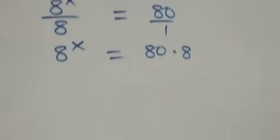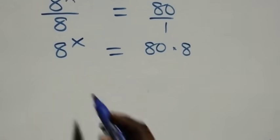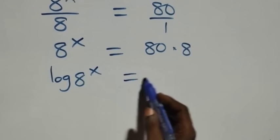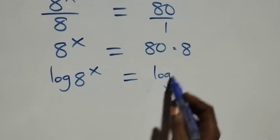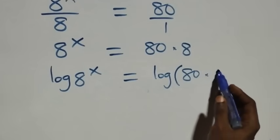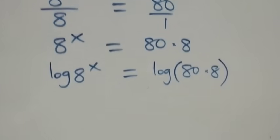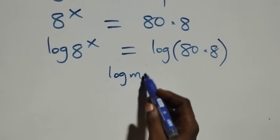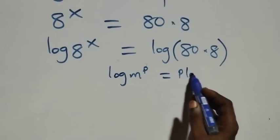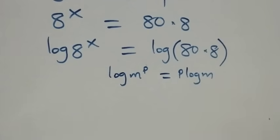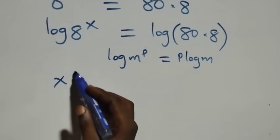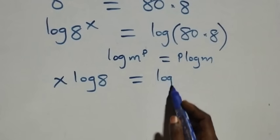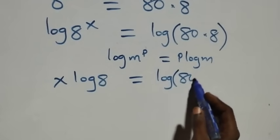The next step: we take the log on both sides, that is we have log of 8 raised to power x equals to log of 80 times 8. Then we apply the power law of logarithm, where log m raised to power p is the same thing as p log m. So this becomes x log 8 equals to log of 80 times 8.